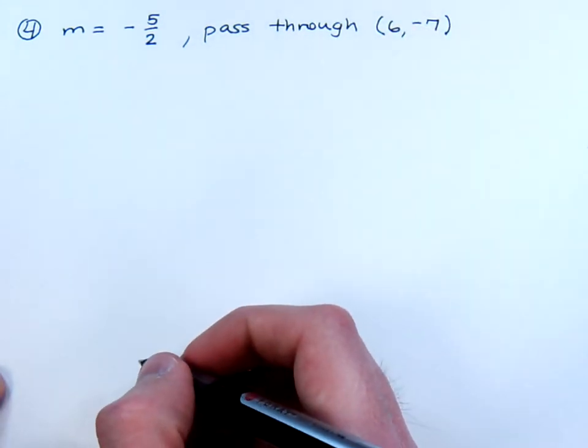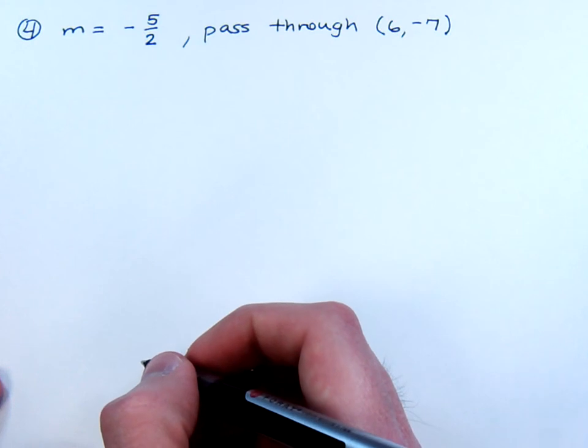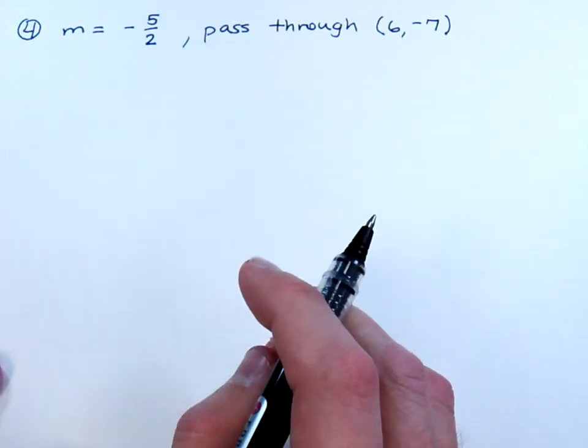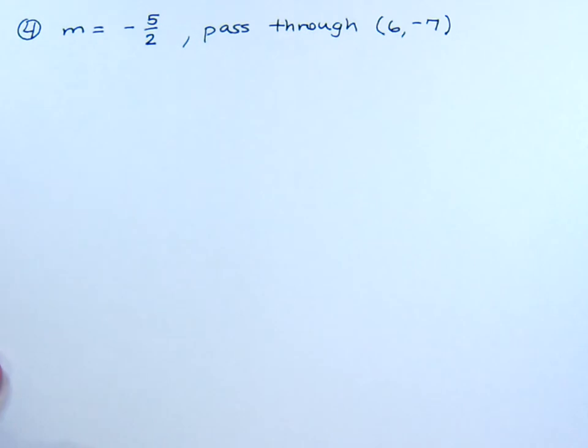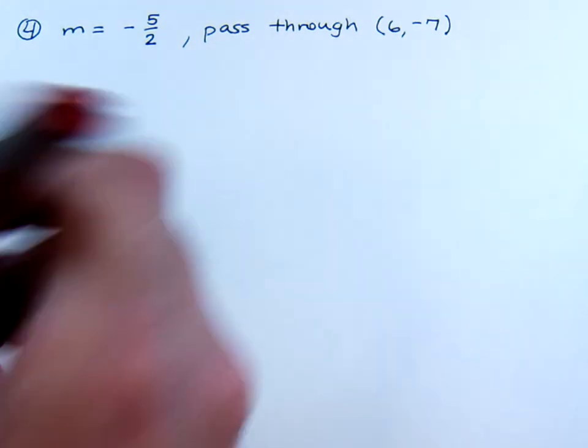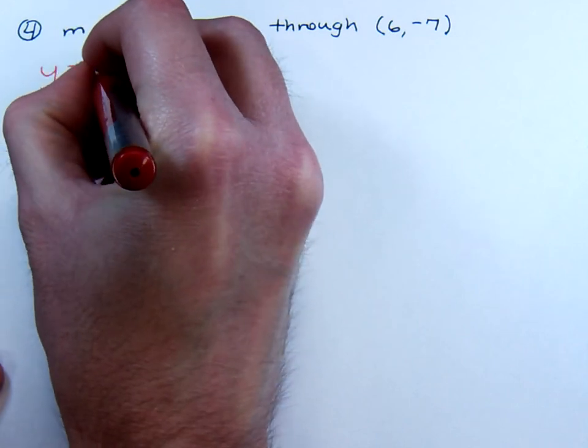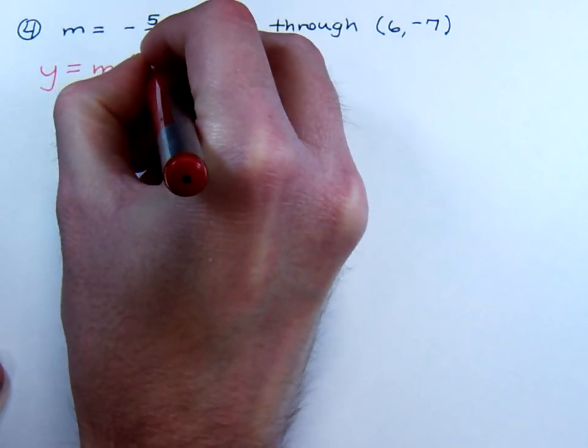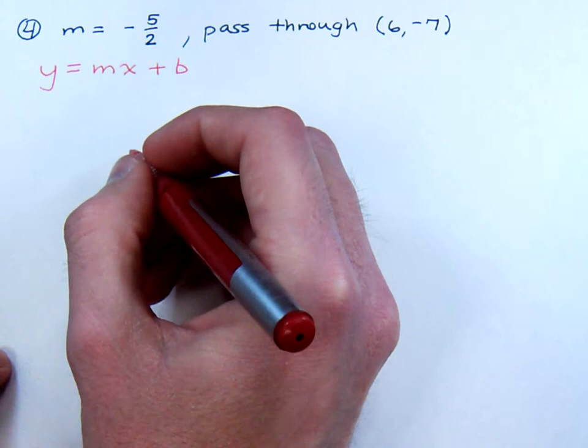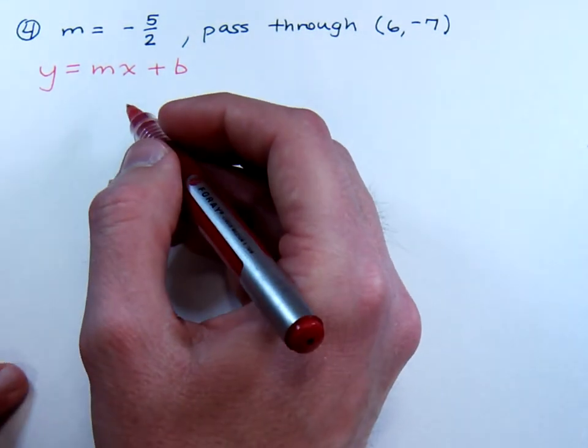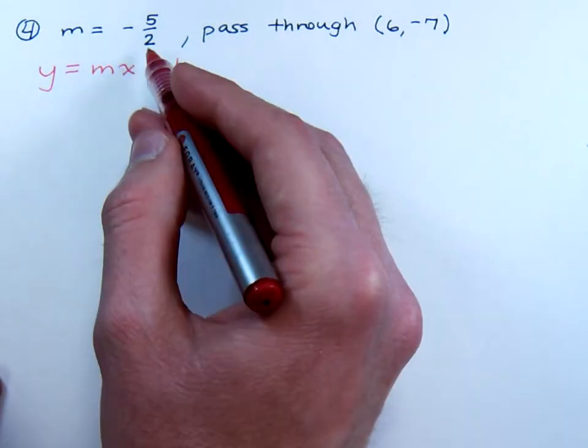The slope is negative 5 halves, and you pass through the point 6, negative 7. Now, I'm going to show you both ways of finding the equation here. One way, of course, is using the slope-intercept form. So y equals mx plus b. Now, when you use the slope-intercept form, that's because you already have the slope.